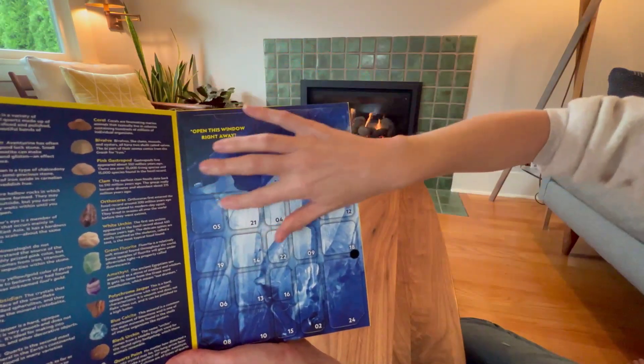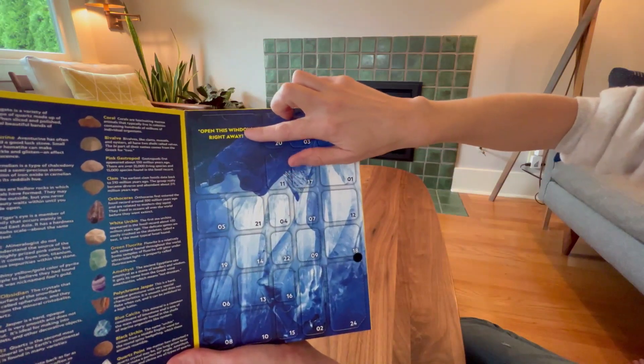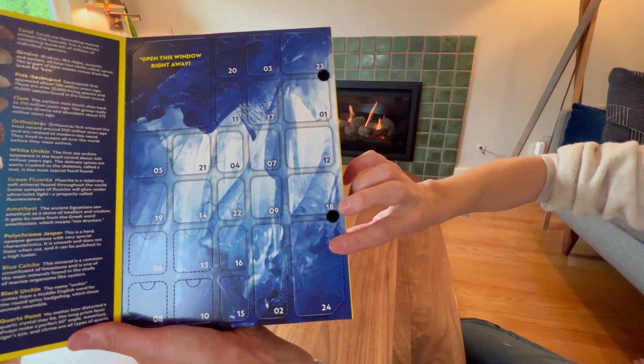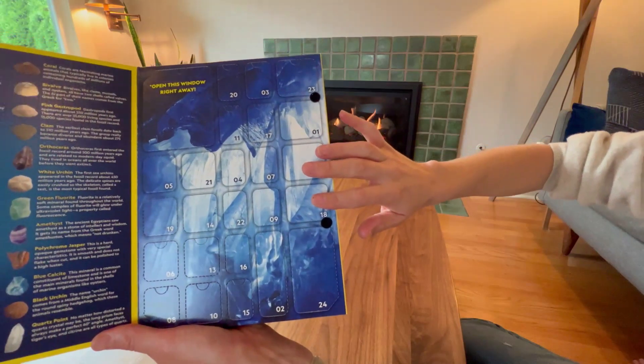Over here you have this window that opens right away. This will be all of your supplies, and then it goes through all the different days, with 24 being a large one. Let's see what comes in this kit.